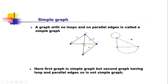In this video we'll discuss simple graphs and their theorem in graph theory. A graph with no loop and no parallel edge is called a simple graph. For any graph with any number of vertices, if it does not contain any loop or parallel edge, then it is called a simple graph.